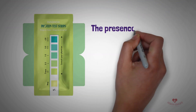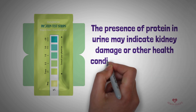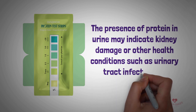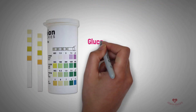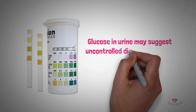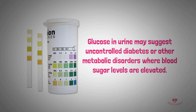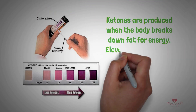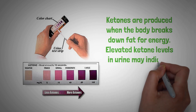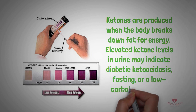The presence of protein in urine may indicate kidney damage or other health conditions such as urinary tract infections or dehydration. Glucose in urine may suggest uncontrolled diabetes or other metabolic disorders where blood sugar levels are elevated. Ketones are produced when the body breaks down fat for energy; elevated ketone levels in urine may indicate diabetic ketoacidosis, fasting, or a low carbohydrate diet.